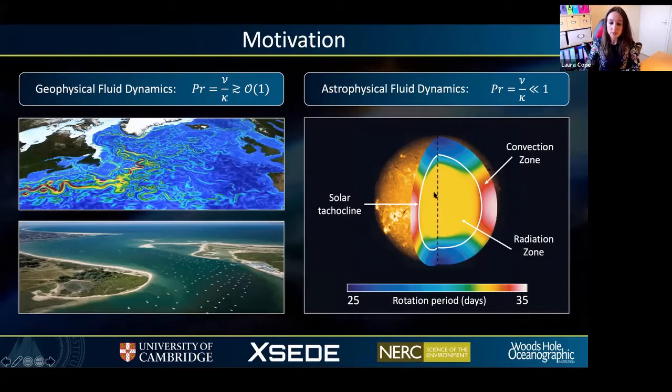We also have an inner radiative zone which to a first approximation behaves like solid body rotation. Between these zones we have a thin transition layer called the solar tachocline. This is believed to play an important role in the evolution of stars and is characterized by strong density stratification, along with both vertical shear and horizontal shear due to the differential rotation.